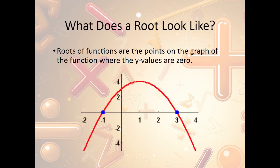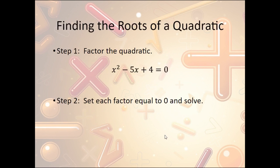So what does a root look like? It's an x-intercept, or where the line crosses the x-axis. It crosses here and then comes back down and crosses here — we call those the roots. So how do we find the roots of a quadratic? The first step is to factor the quadratic any way you can, and then solve for the roots.